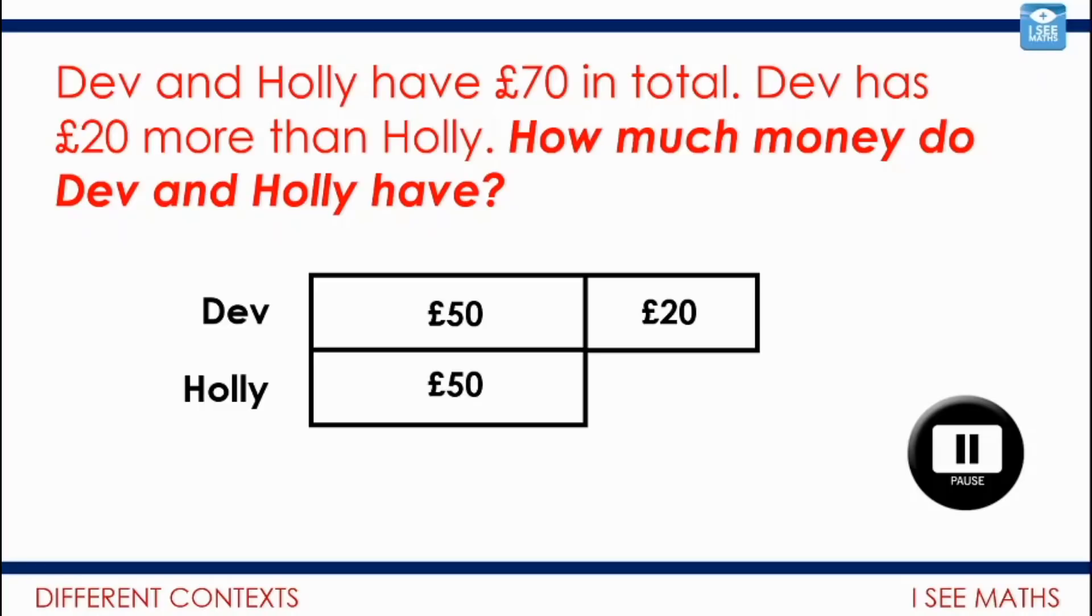Well, Dev and Holly have £70 in total. In this bar model, this has been represented. So Dev has £70, not Dev and Holly have £70. Hmm. So how will the bar model need to look different? Dev has got £20 more. That leaves £50 that otherwise is split equally between Dev and Holly. So Holly would have £25. Dev, £45.